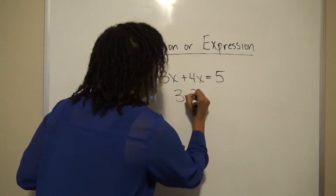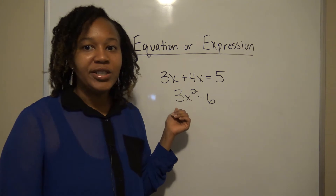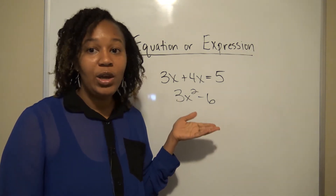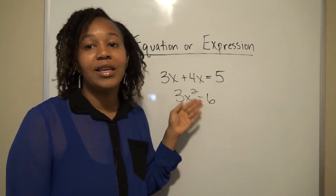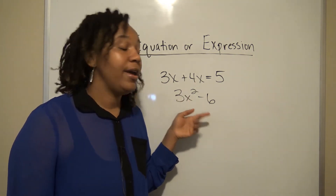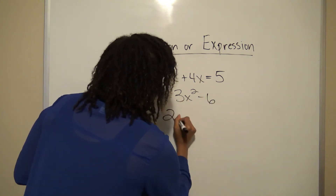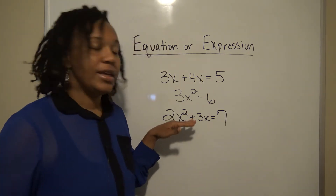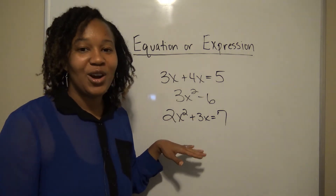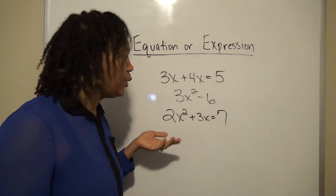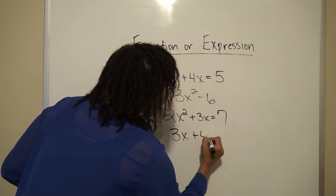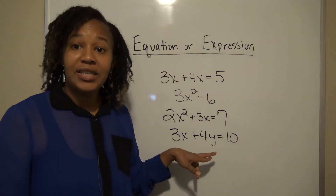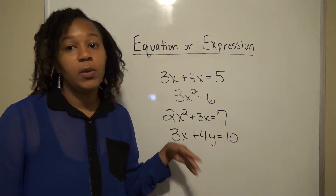What if I had 3x² - 6? Is that an equation? If you say no, you are correct. This is not an equation because it has no equal sign. If it has no equal sign, then this is just an algebraic expression. What about 2x² + 3x = 7? If you say yes, you are correct — it has an equal sign, so it's an equation. And 3x + 4y = 10 is also an equation because it has an equal sign, even though it has more than one variable.